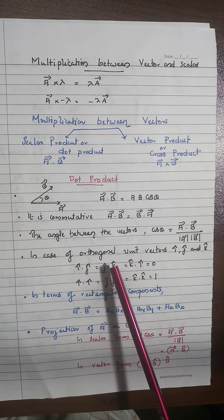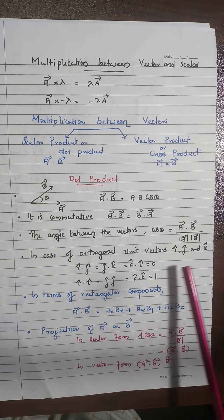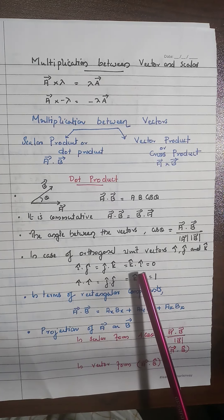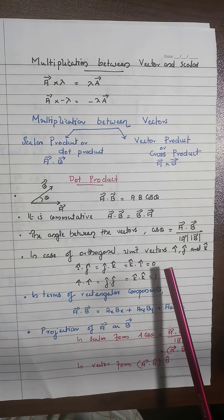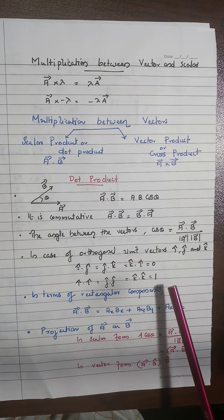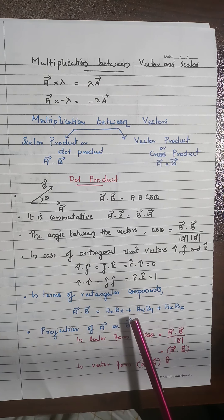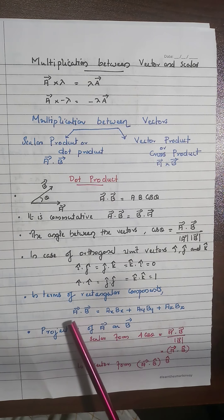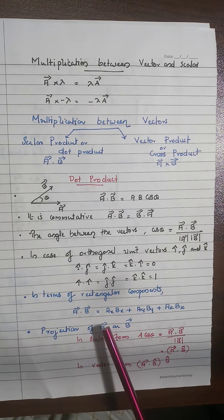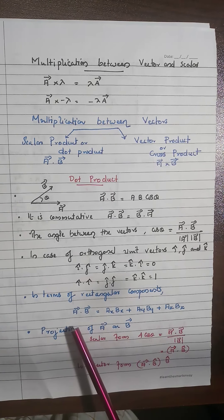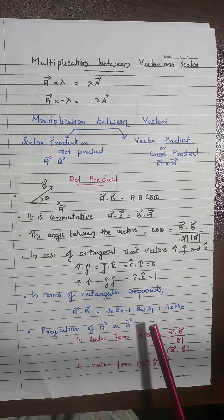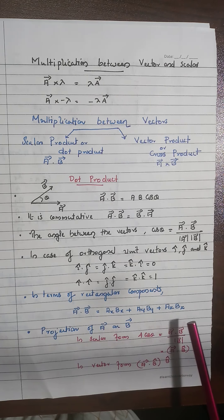For orthogonal unit vectors î, ĵ, k̂: î·ĵ = ĵ·k̂ = k̂·î = 0, and î·î = ĵ·ĵ = k̂·k̂ = 1. Hence, if A = Axî + Ayĵ + Azk̂ and B is similarly expressed, then A·B = AxBx + AyBy + AzBz.